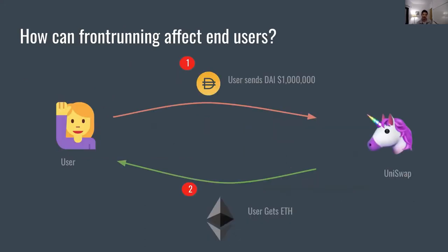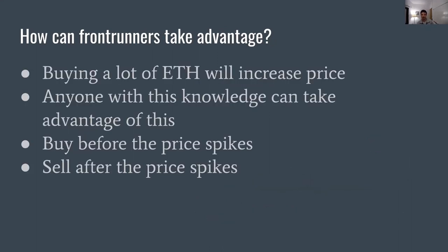How can someone who knows this fact take advantage of this transaction order, or how does front-running work? Assume there is a user and they want to exchange a rather big amount of DAI for ETH on a decentralized exchange such as Uniswap. Someone who wants to take advantage of this fact knows that this large transaction will most likely cause the price of ETH to spike up. The way to take advantage of that is to put in their transaction first, or front-run the user's transaction, buy the ETH at what is actually a discount on the price, and eventually sell it, or keep it.